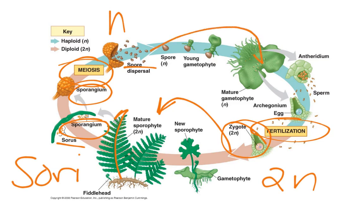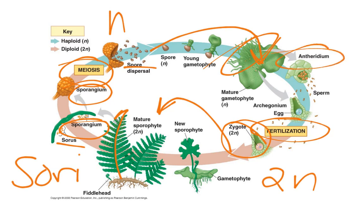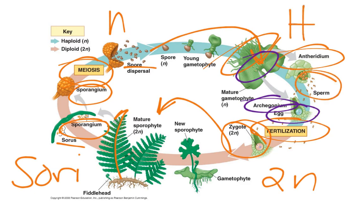Those spores are going to develop into a hermaphroditic — or monoecious, meaning 'one house,' which means there's one structure that has both male and female parts — organism. It's going to have the anthridia, which are the male part of the plant, and it's also going to have the archegonia, which are the female part of the plant. The archegonia will have the eggs; the anthridia will have the sperm. We're going to rely on water — rainwater and dew — and ferns like mosses are going to need to be in a wet environment so the sperm can swim down into the archegonium, fertilize the egg, and start the whole process over.